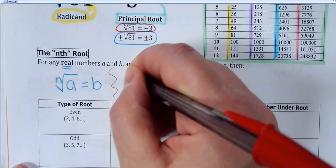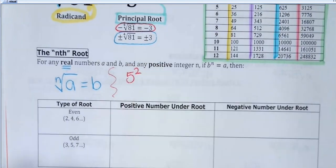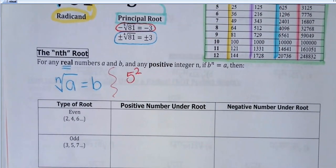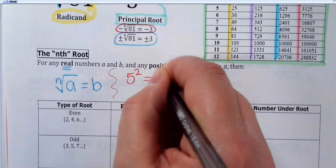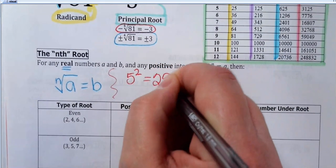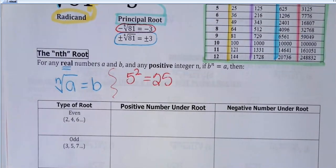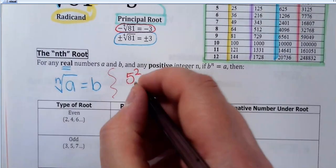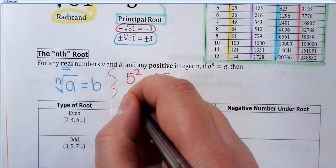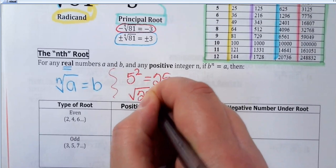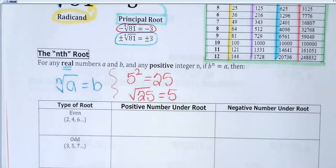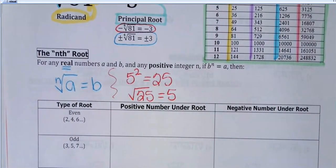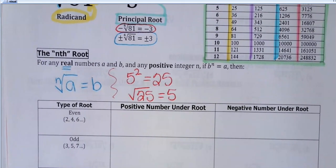So if I do 5 squared — where I had b to the n — 5 squared is equal to 25. So if I do the square root of 25, then that is equal to 5. That's what that definition is trying to tell you: we can reverse that exponent and change it into a root.